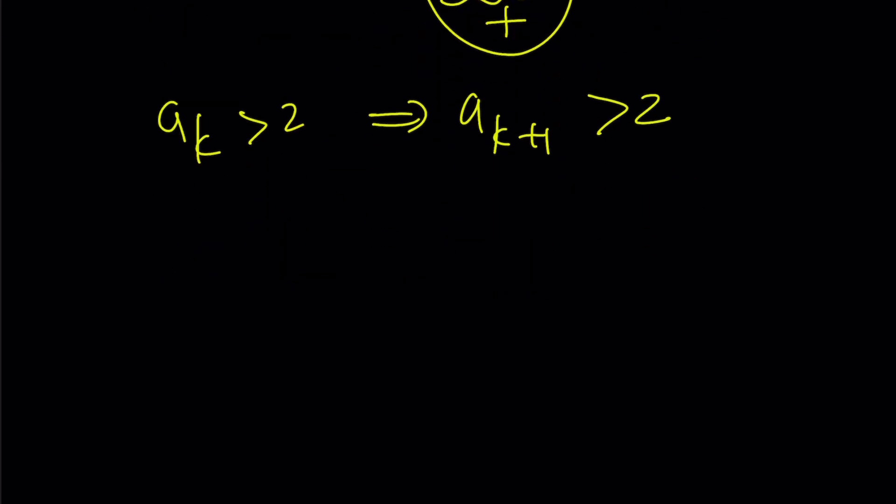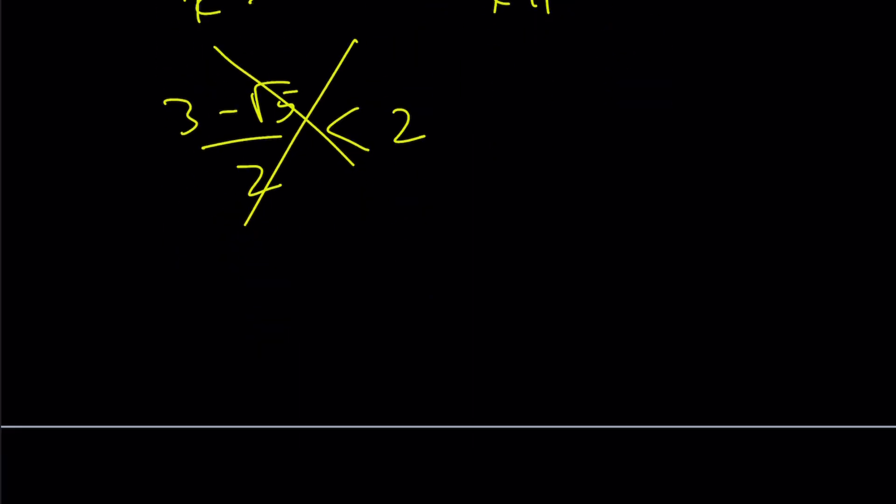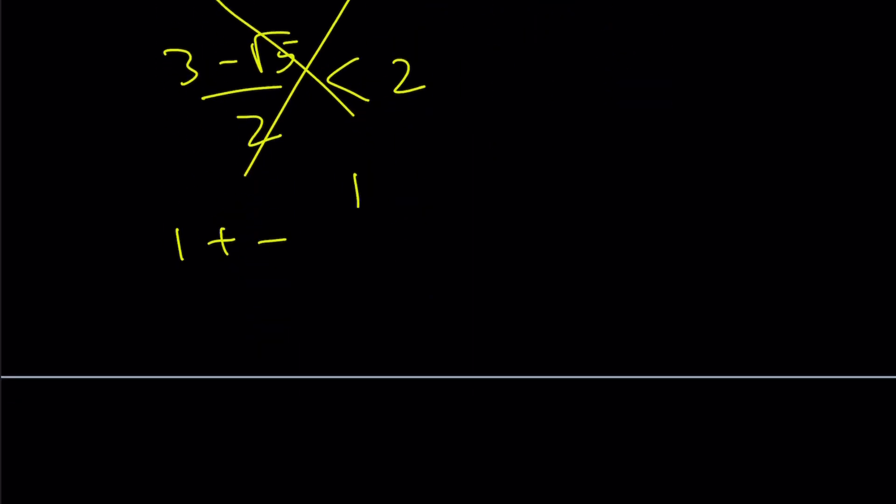So now let's take a look at the two solutions. 3 minus root 5 over 2 is less than 2. So we're going to reject that solution and we're going to go with the other solution. Therefore, our expression converges to 3 plus root 5 over 2. That's going to be the value we've been looking for.